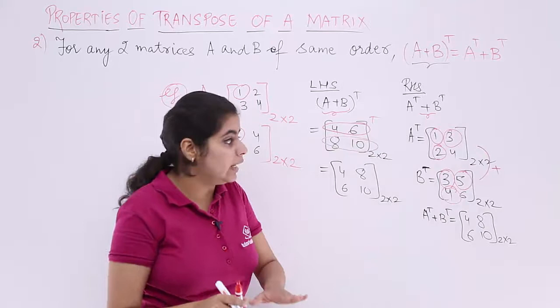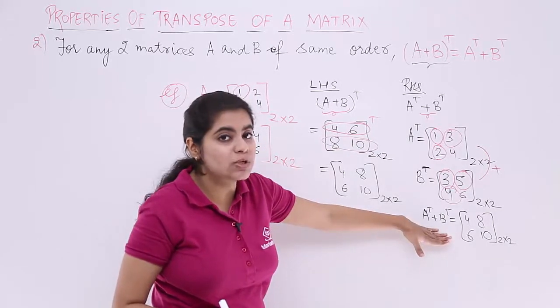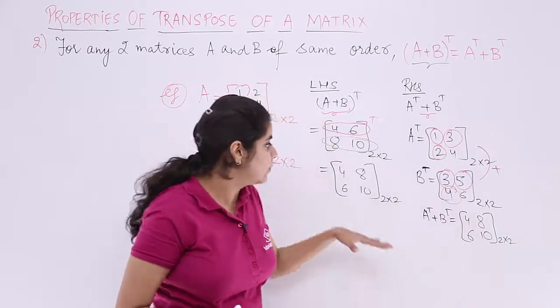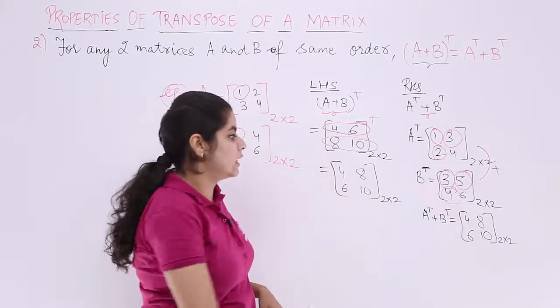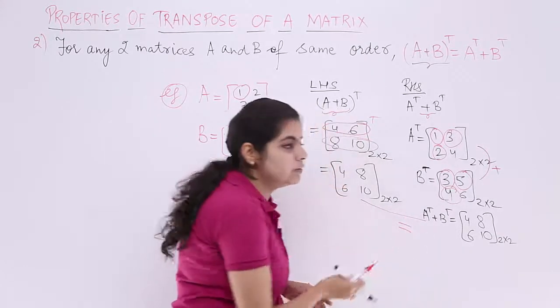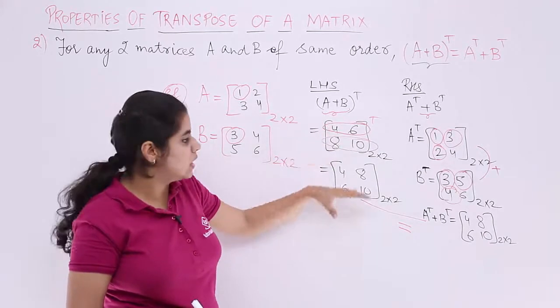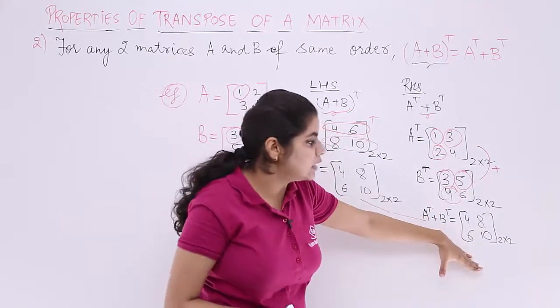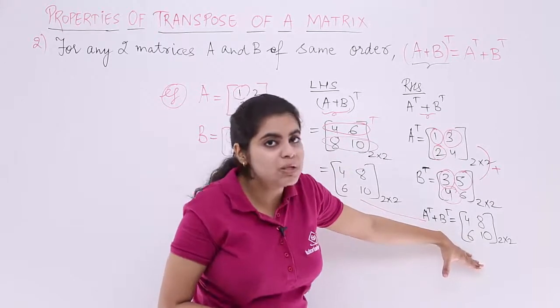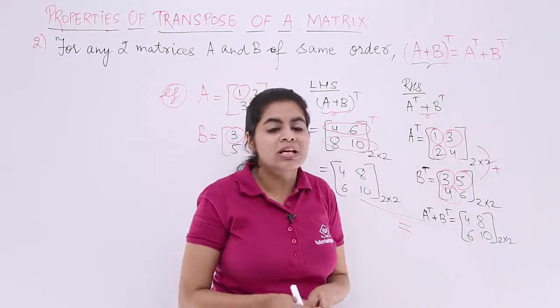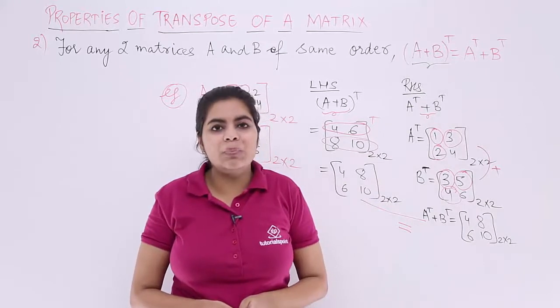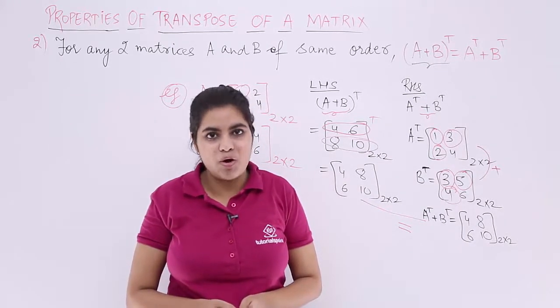So the matrix that you obtain as the result of A transpose plus B transpose is 4, 8, 6, 10. Here also you got 4, 8, 6, 10. It means that these results are equal. Right? So you started with A plus B whole transpose, result was this. You started with A transpose plus B transpose, the result was same. That means this property is followed. So this is all about the second property based on transpose of a matrix.